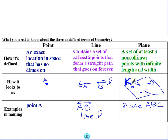Or sometimes there's a big bolded letter that goes along with the plane, or a scripted letter in cursive. You can also just call that plane K. Alright, so that is point, line, and plane.